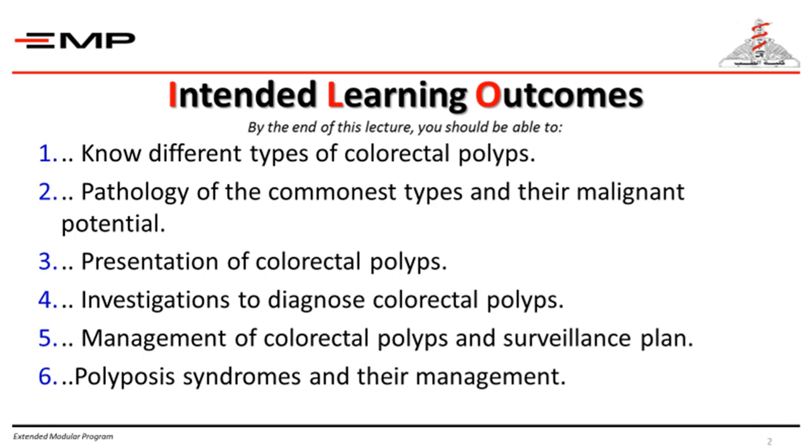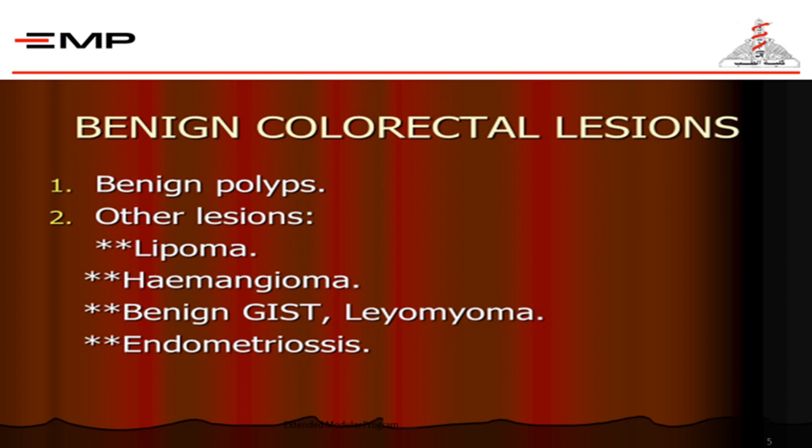We will also cover the management of colorectal polyps, the mandatory surveillance plan, and the polyposis syndromes, whose management differs greatly from solitary or multiple polyps. The colorectal lesions are either benign or malignant. The benign lesions include benign polyps, as well as less frequent lesions that mimic colorectal polyps: lipomas, submucous lipomas, hemangiomas, benign gastrointestinal stromal tumors (GIST), leiomyomas, and endometriosis.